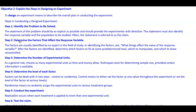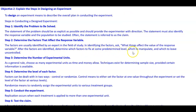Step two: determine the factors that affect the response variable. The factors are usually identified by an expert in the field of study. Ask what things affect the value of the response variable. After the factors are identified, determine which factors to fix at some predetermined level, which to manipulate, and which to leave uncontrolled.